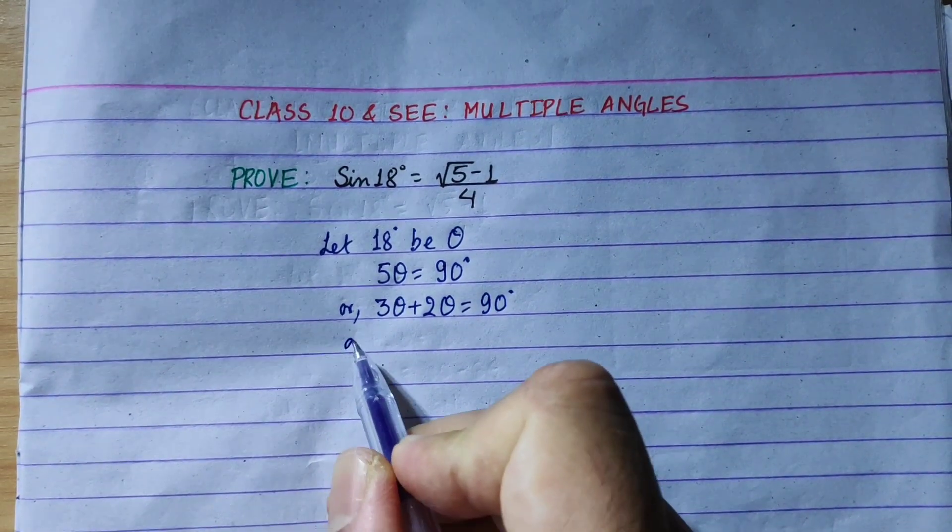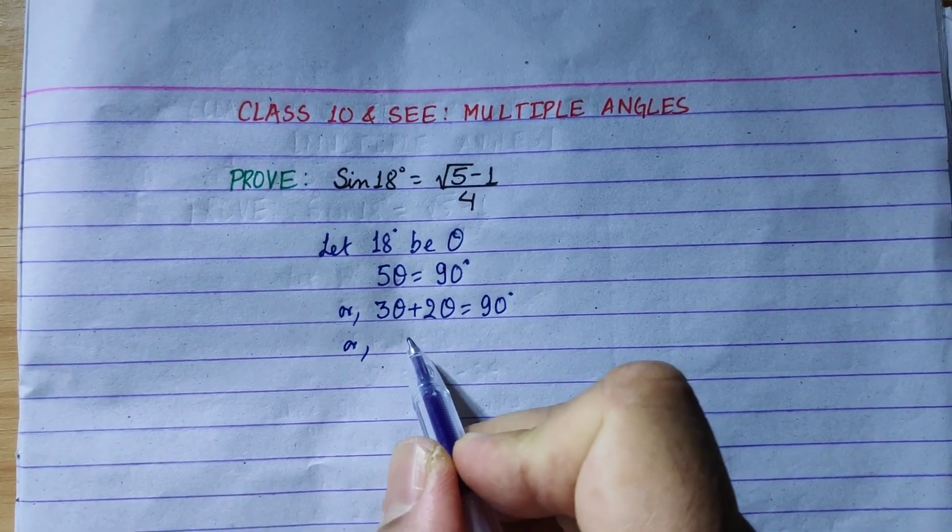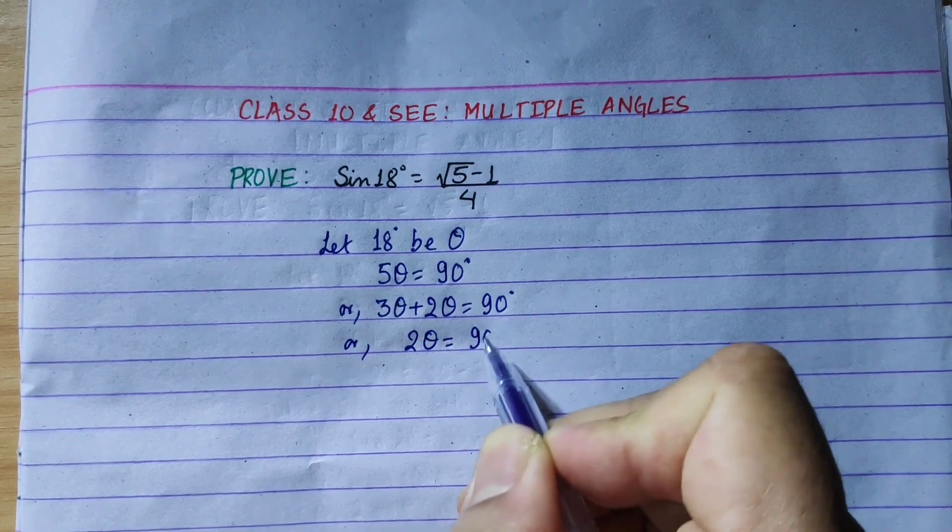We can write 3 theta is equal to 90 degrees minus 2 theta.